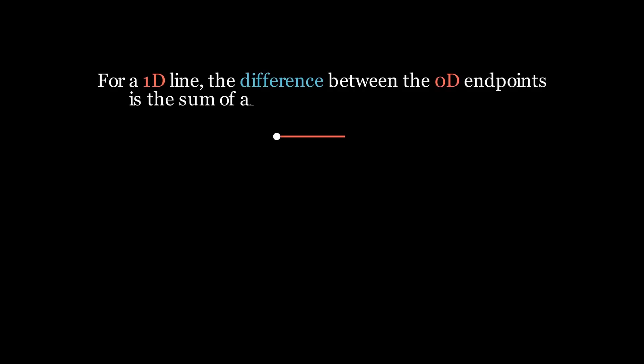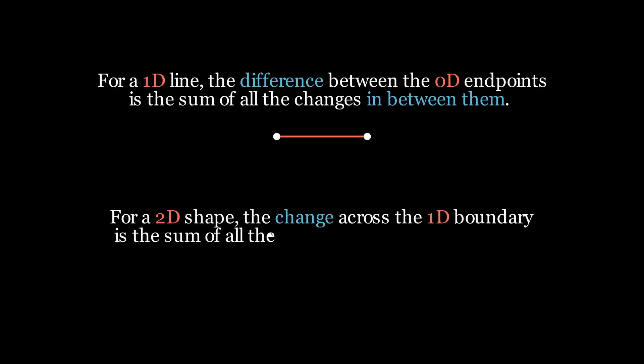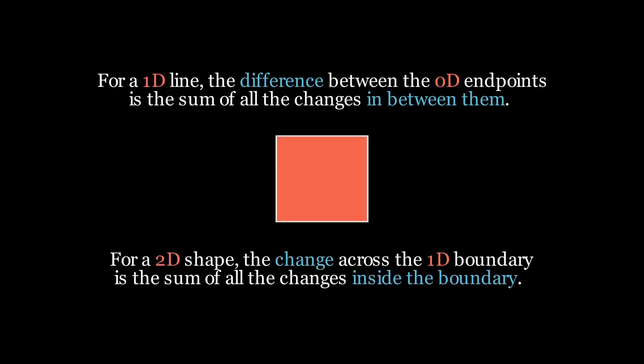Let's now think back to the fundamental theorem of calculus. It says that for a one-dimensional line, the difference between the zero-dimensional endpoints is the sum of all the changes between them. Now, let's finally add a dimension to this. For a two-dimensional shape, the change across the one-dimensional boundary is the sum of all the changes inside the boundary.